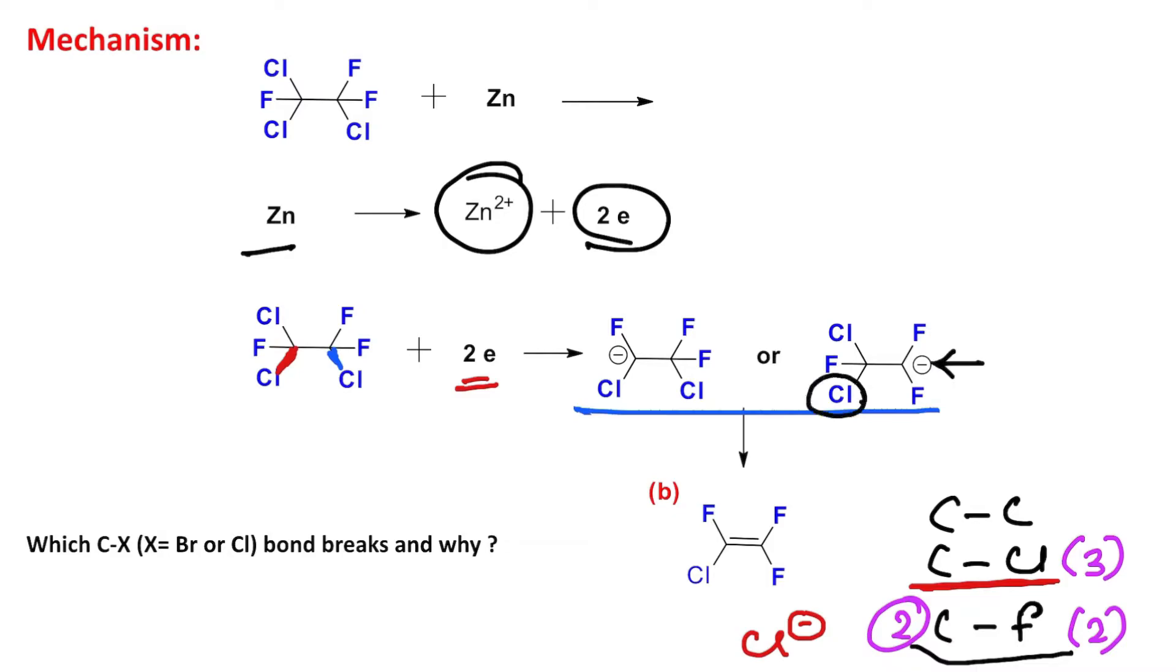So it leaves and ultimately produces alkene. Similar story for this one also—it will push, this leaves. In this case you can see there are three fluorine atoms, so there is no issue of cis and trans.